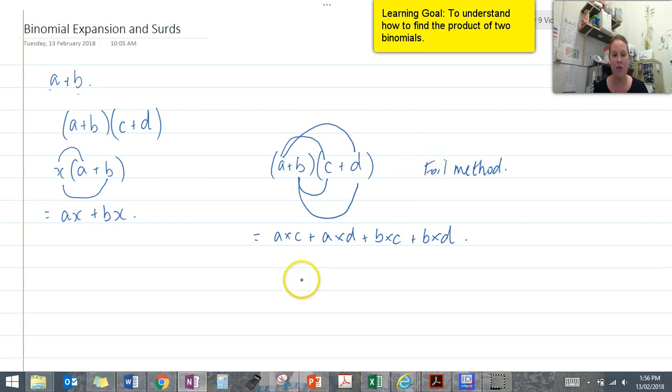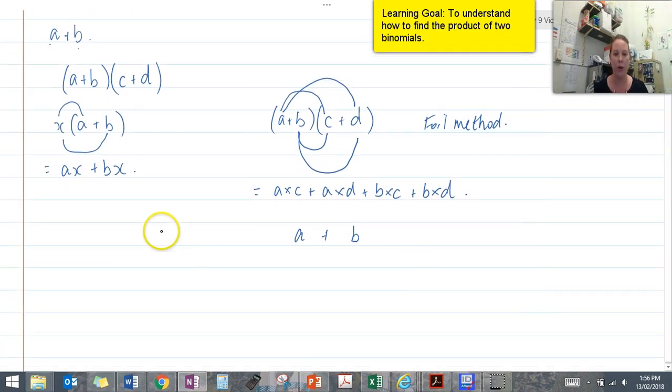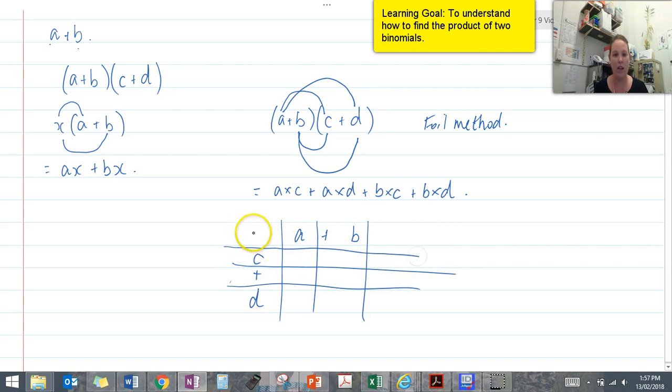The other method that you can use is called the area method, and we set that out like this. So we have our first binomial, a plus b, and we're going to multiply that by c plus d. And we draw it up into a little table like this, and we multiply each of the parts into the boxes, kind of like what you used to have done with your multiplication tables. So c times a is ac,